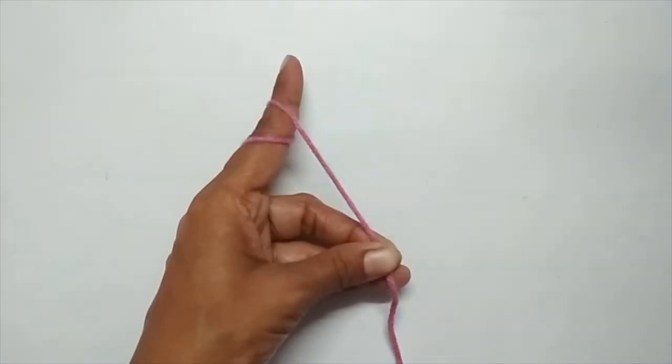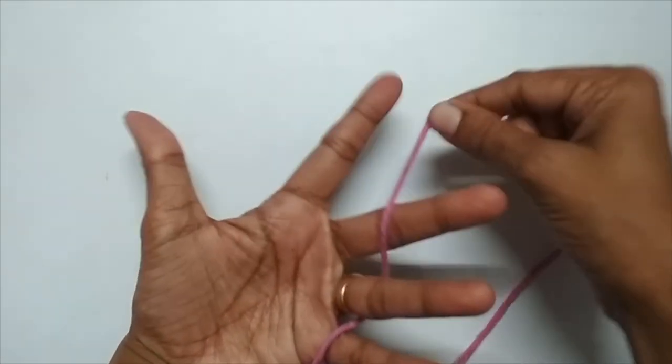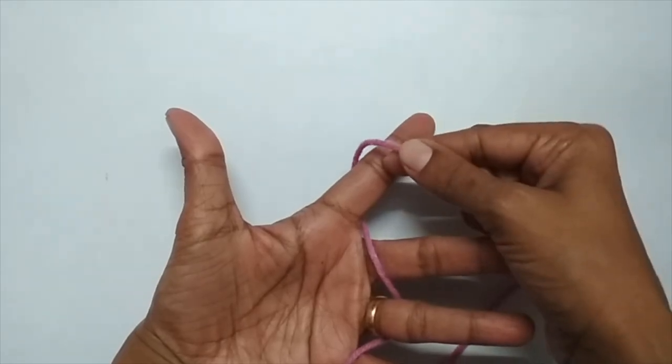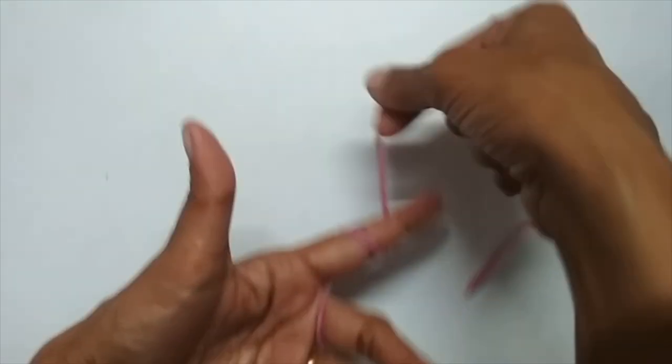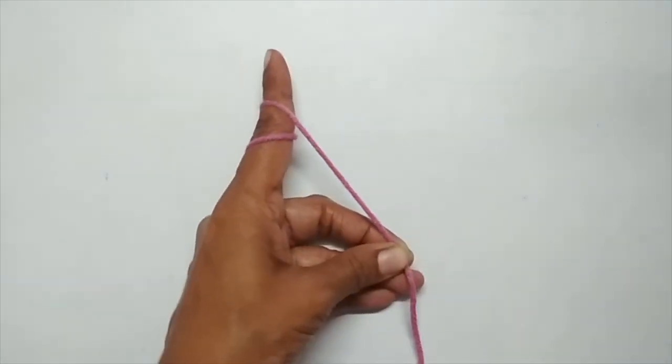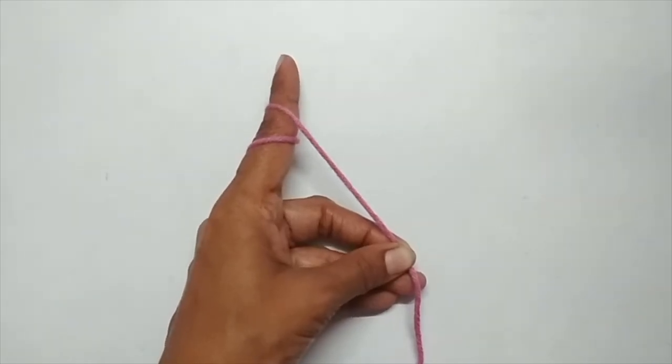So this is another way. I'll show it once again. You weave it through your fingers like this, and once when you come to your pointing finger, make a loop and then hold your yarn with the help of your thumb and your middle finger. So this is another way of holding your yarn.